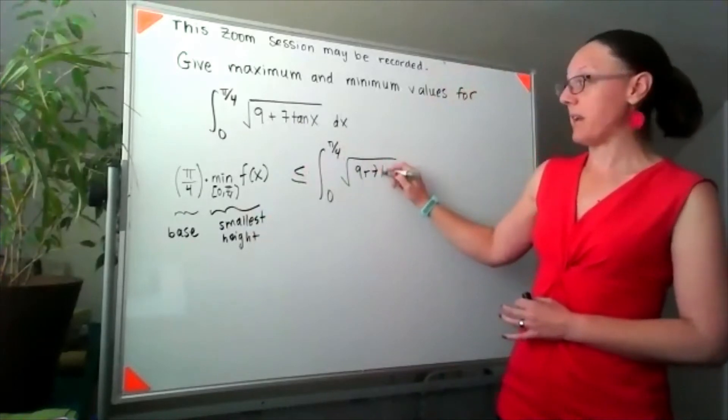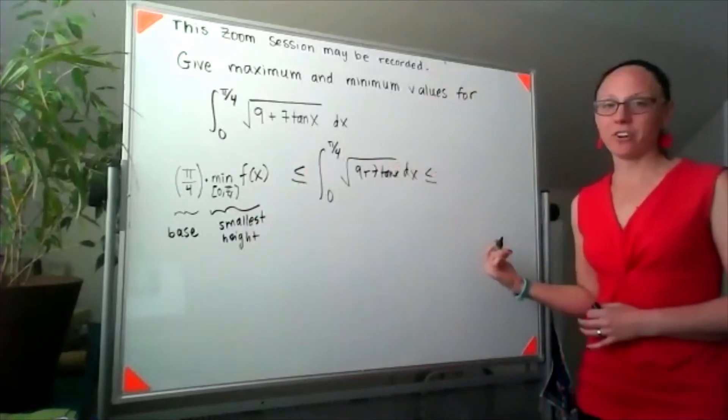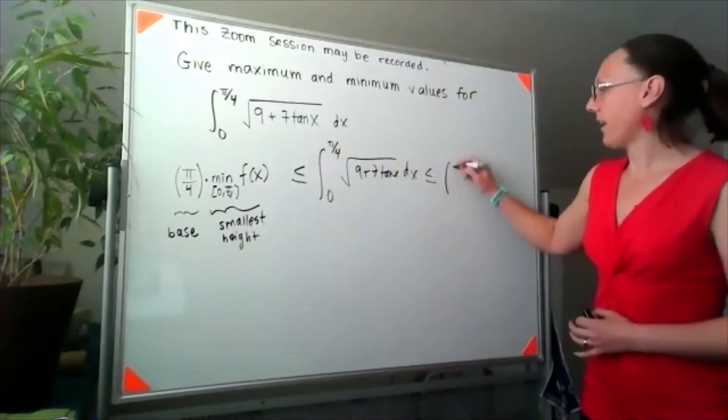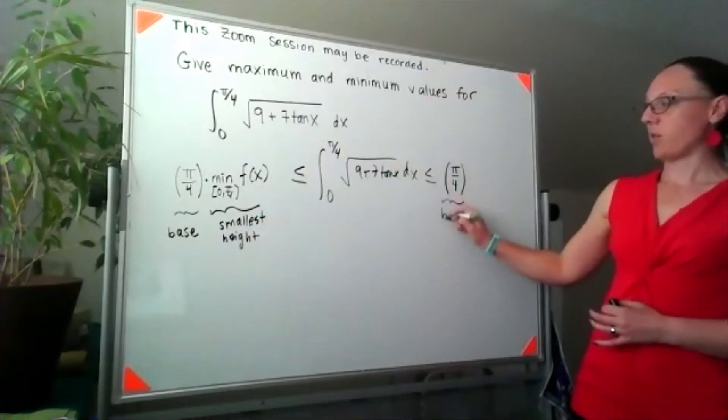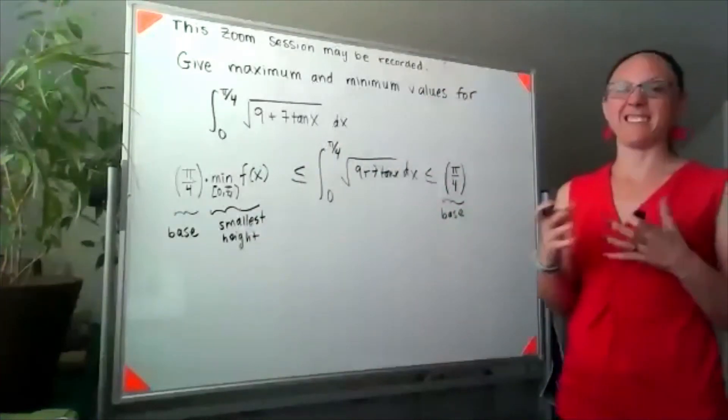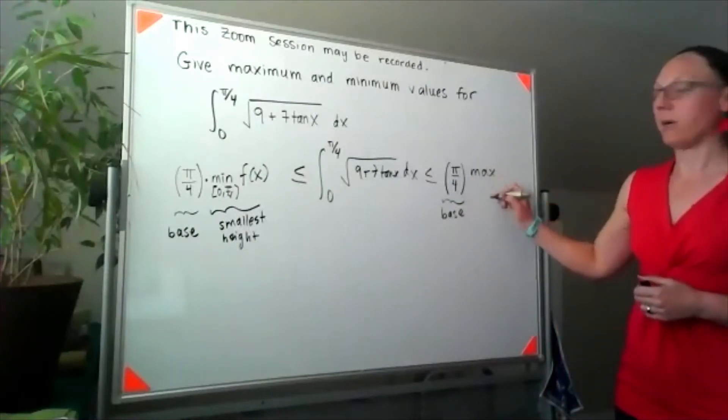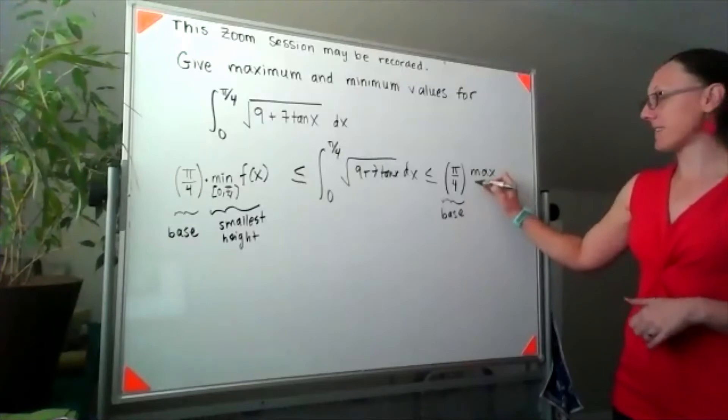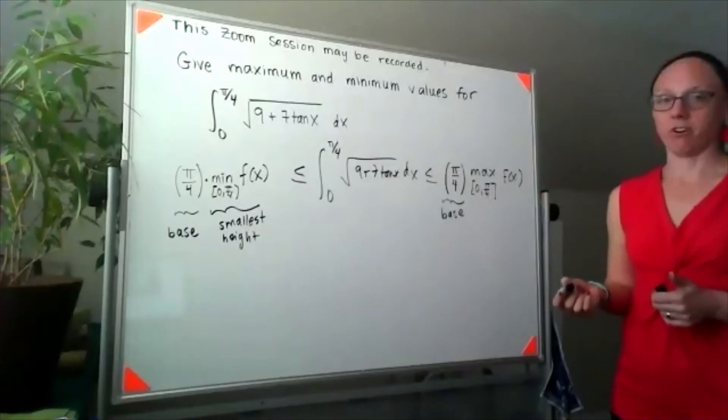I'm just copying that integral down again. And at the other extreme, again the width of my interval is pi over four, so that would be the base of essentially a single rectangle, but now I would multiply that by the maximum value on zero to pi over four of our function.